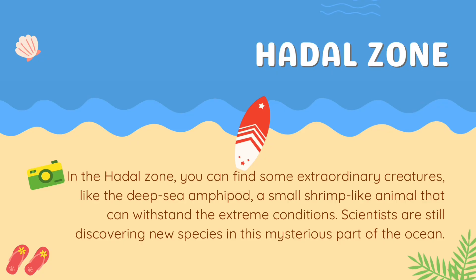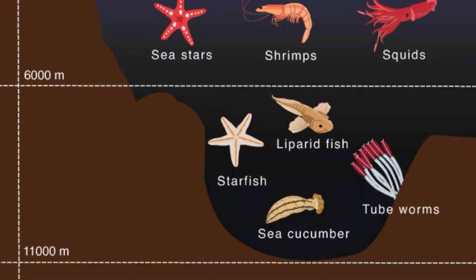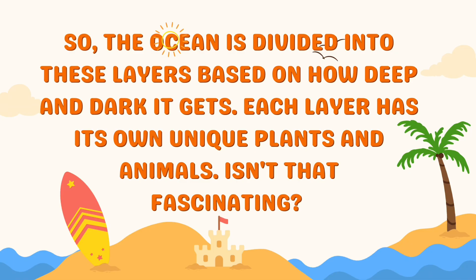In the hadal zone you can find some extraordinary creatures, like the deep sea amphipod — a small shrimp-like animal that can withstand the extreme conditions. Scientists are still discovering new species in this mysterious part of the ocean. The ocean is divided into these layers based on how deep and dark it gets, and each layer has its own unique plants and animals.